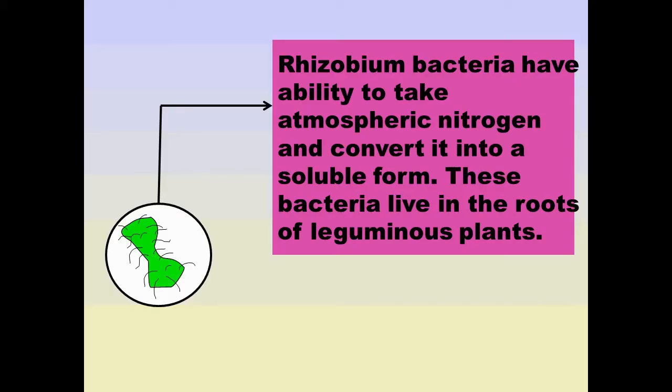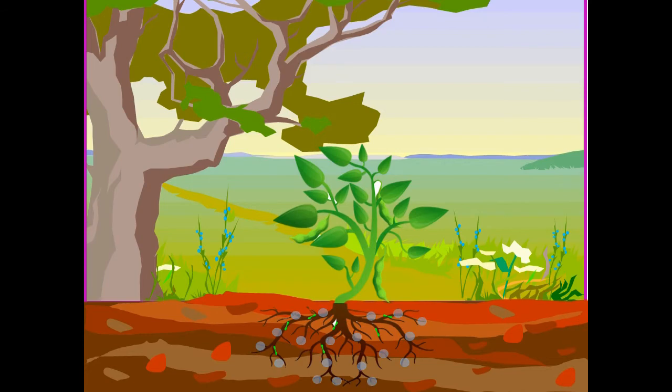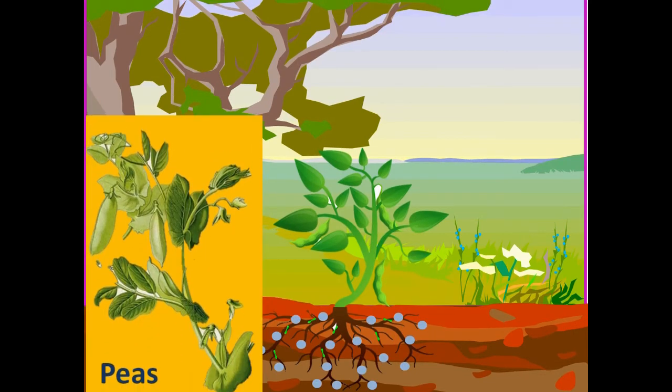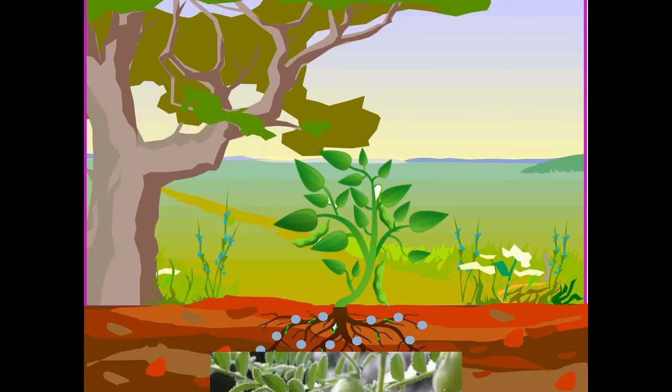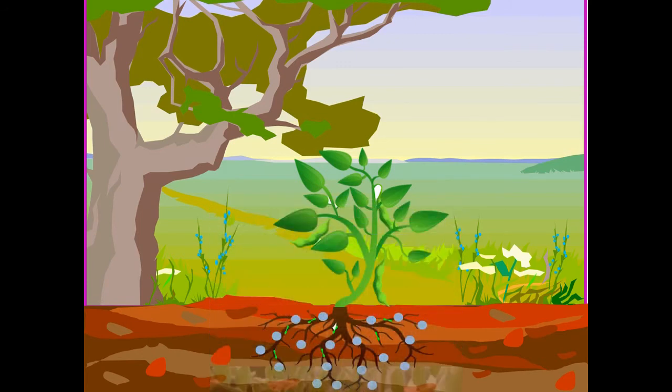These bacteria live in the roots of leguminous plants like gram, peas and moong beans and other legumes and provide them with nitrogen.